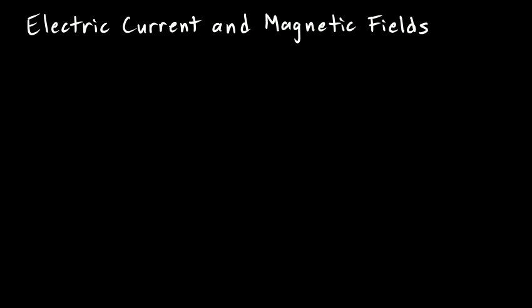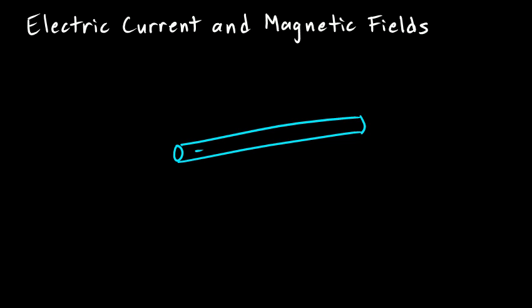Now we'll talk about electric current and the magnetic field produced by current flow through a wire. Let's talk about the simple case first where we just have a piece of wire and the current flowing. There's a bit of confusion about which way the current flows if we imagine a bunch of electrons moving along this wire. I'll draw little negative signs to indicate the electrons, and let's say they're moving through the wire in this direction. Electrons are negative, and negative charge moving to the right turns out to be exactly the same thing mathematically as positive charge moving to the left.